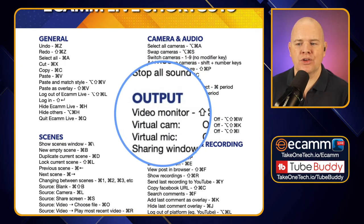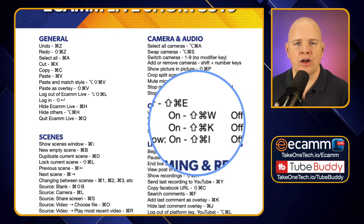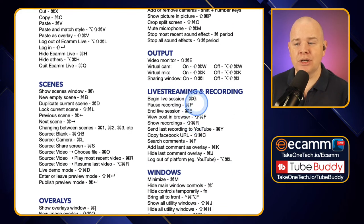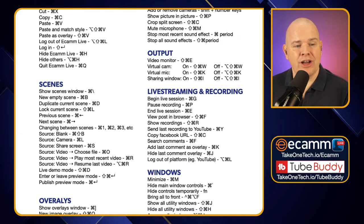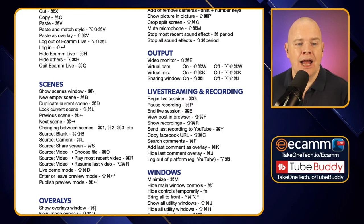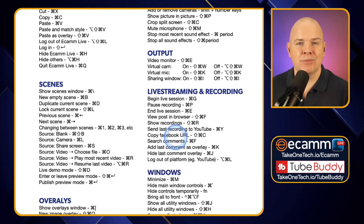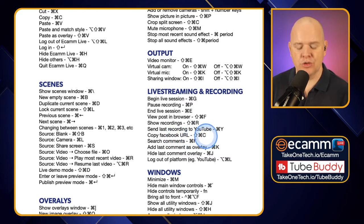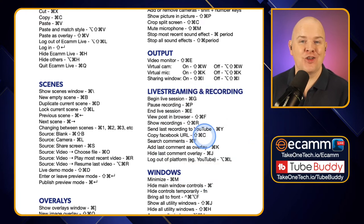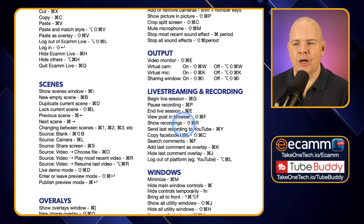We've got some related to output — so things like the virtual camera, virtual mic, and what the keyboard shortcuts are to toggle those on and off. We've got some related to live streaming and recording, where again there are some where you might not necessarily know where to look. For example, if I am in record mode and go to the Ecamm Live menu, there are options to begin recording and end recording — that is actually in the Ecamm menu itself. And when live streaming, if you go to stream to Facebook for example, there is actually a shortcut to copy the Facebook URL — Command Shift C — so you can quickly grab the stream URL to post it somewhere. I've grouped those related to live streaming together as well.